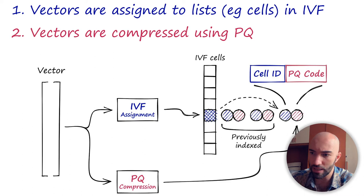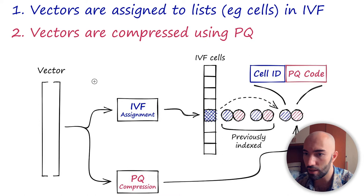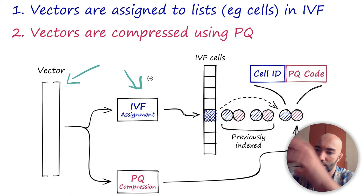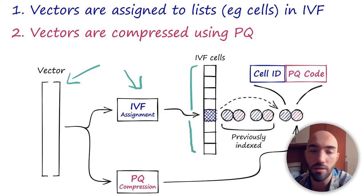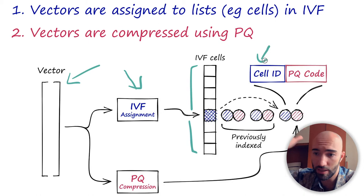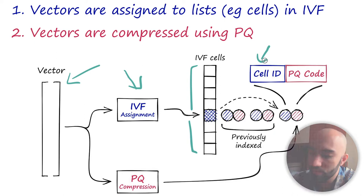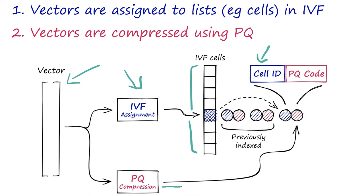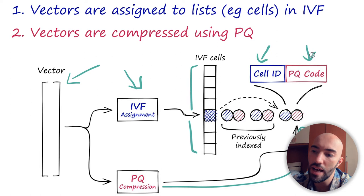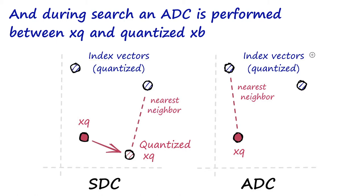During indexing, when we first take our vectors and add them to the index, there are two main steps. Vectors are assigned to lists or cells — that's the IVF part. So we're taking our vector, assigning it to IVF cells which are the Voronoi cells we usually visualize, and from that we get a cell ID. The second step is that those assigned vectors go through a product quantization compression step where we create a PQ quantized code. Those codes get stored in the IVF list — that is an IVF ADC index at its core.